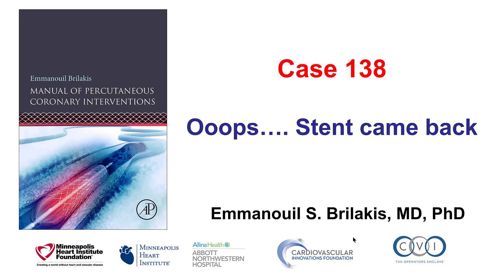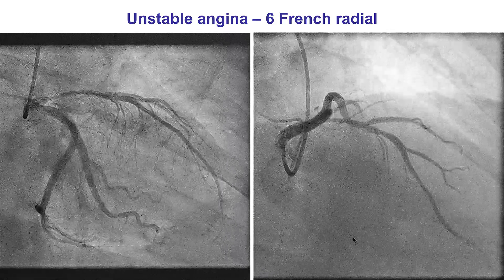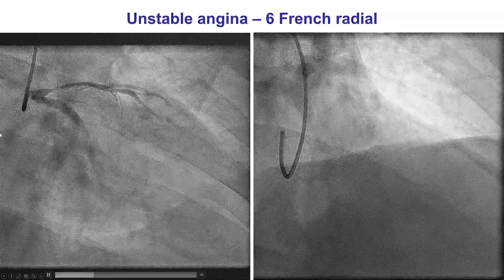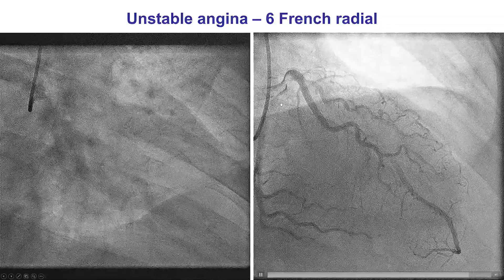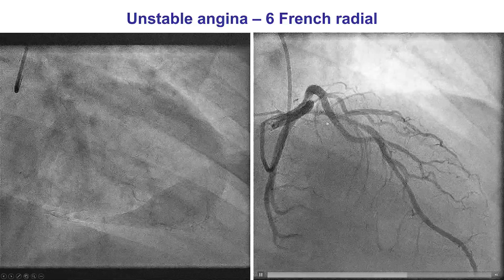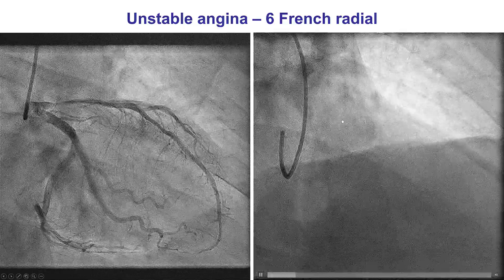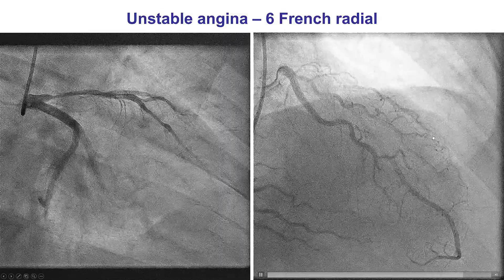This is a case in which the stent came back way back into the aorta. The patient presented with unstable angina and was found to have a significant lesion in the proximal left anterior descending, extending towards the mid-LAD, a little distal to the takeoff of a sizable diagonal branch.